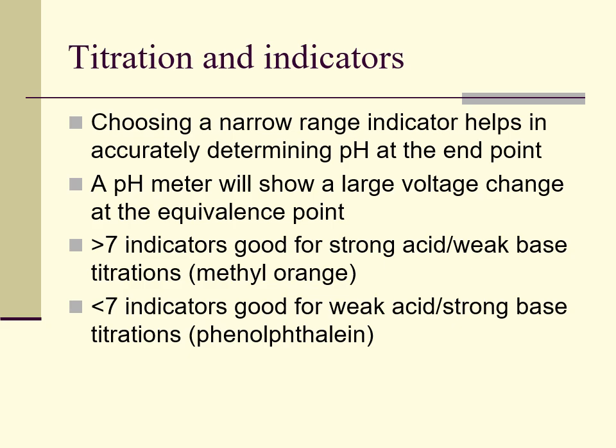Regarding titrations and indicators: choosing a narrow range indicator will help to accurately determine pH at the end point, although you can use a pH meter or pH probe hooked to a computer to show that voltage change and graph it. Generally speaking, if you're going to have a pH greater than 7 or under 7, you want to choose the appropriate indicator. For example, phenolphthalein is a very commonly used indicator — around a pH of 8 or 9, it changes pink, so it's very visual.